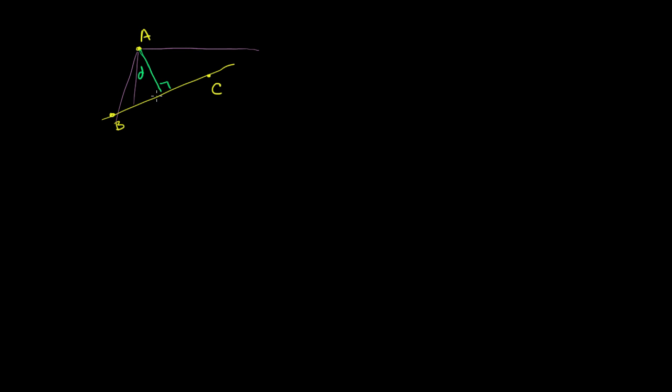To recognize that this is indeed the shortest distance, think about this relative to the distance between this point and any other point on this line. Pick another point on this line — let's call this point E — and think about this distance. This is an arbitrary point; I could have drawn E here, I could have drawn E here.